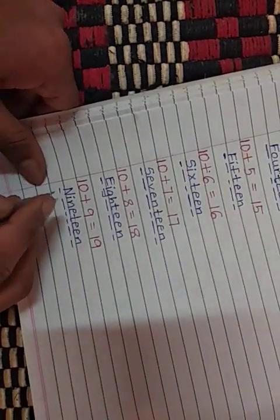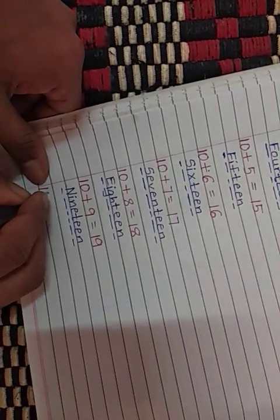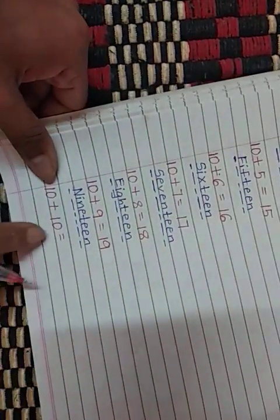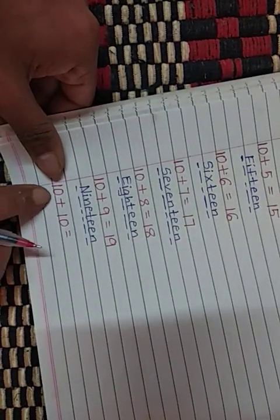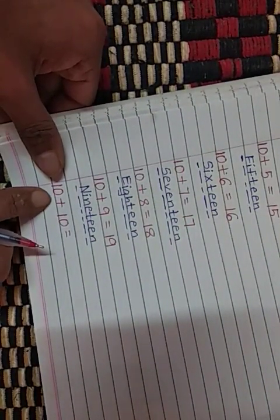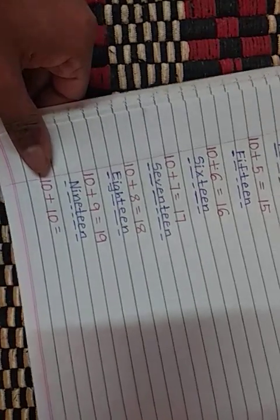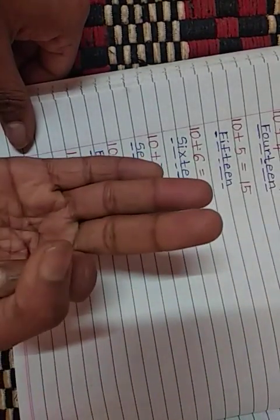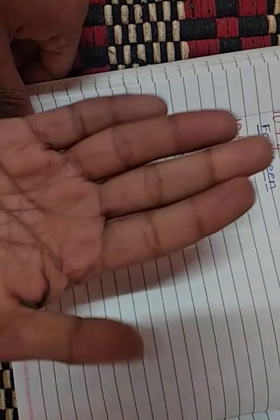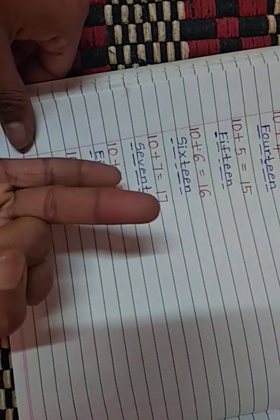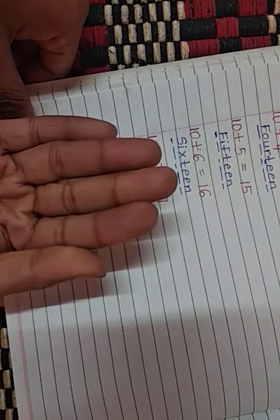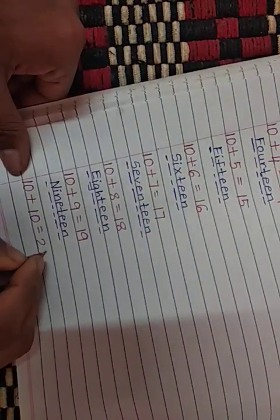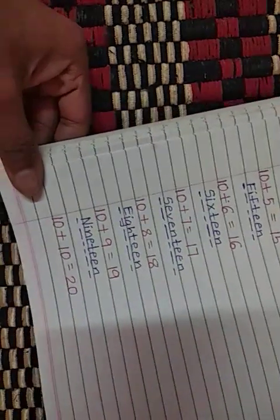Similarly, we will go with the next one. 10 when added with 10, how much will it be? After 10, you should keep this in your mind. After 10, count till 10: 11, 12, 13, 14, 15, 16, 17, 18, 19, 20. Answer is 10 plus 10 is equal to 20.